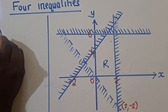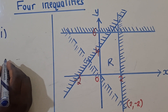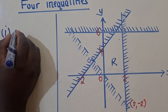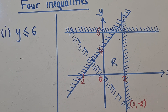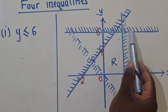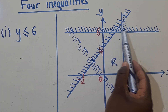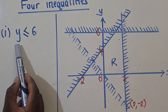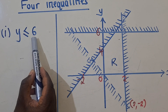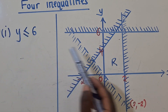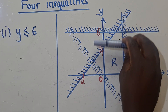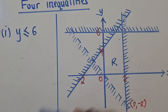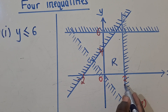So we can say inequality one: y is less or equal to 6. Why have I decided to use y is less or equal to 6? Because this inequality is passing at 6, and it's cutting the y-axis. So y is passing at 6. For the less or equal to, you follow where it's not shaded — the less part is what is not shaded, so we say less or equal to 6.